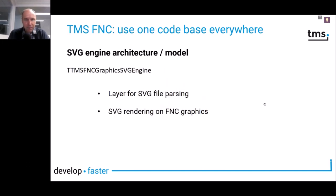Another core part of FNC is an SVG engine. SVG vector images can be used in FNC everywhere. We have implemented an engine that parses SVG files and renders them within components or standalone. SVG is a great way to render sharp images on all kinds of screens with different DPIs, high DPI, etc. This is a standard part of FNC Core.